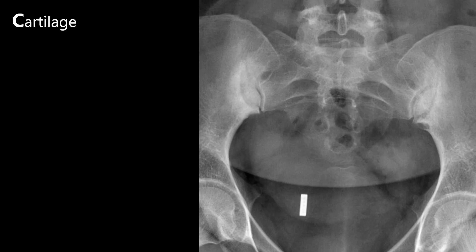This x-ray shows subchondral sclerosis around the sacroiliac joints bilaterally. This is sacroiliitis, which means inflammation of the sacroiliac joints. It's a common cause of lower back pain and can be caused by arthritis, a traumatic injury, and sometimes infection.